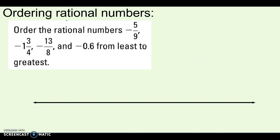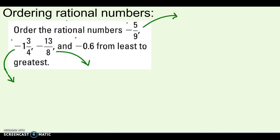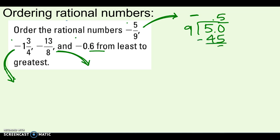Our last type of problem is putting rational numbers in order. I have 4 numbers — they're all negatives, so they'll all be to the left of 0 on the number line. The easiest approach is to get them all in the same form; decimals are probably easiest. I need to change negative 5 ninths into a decimal: 9 doesn't fit into 5, so 9 into 50 goes 5 times — that's 45 — and I keep getting the same pattern. So it's negative 0.55 repeating.